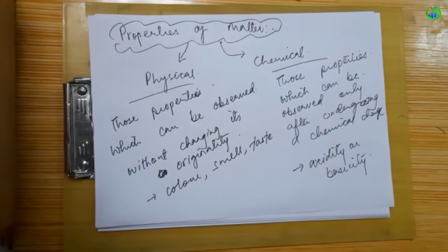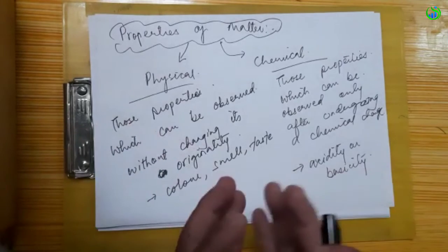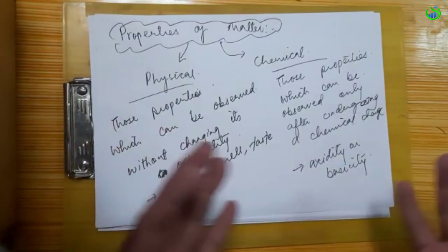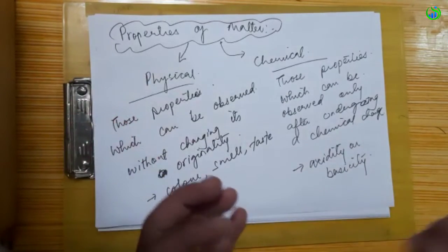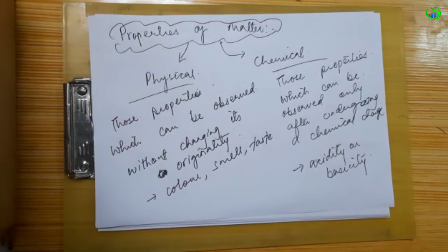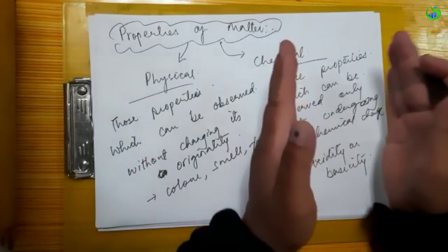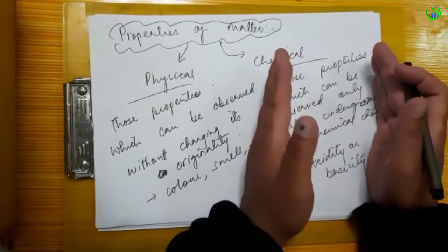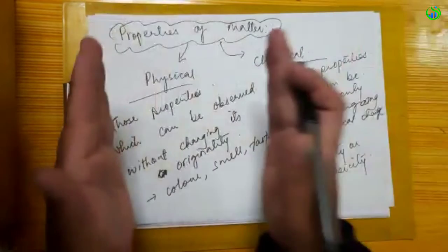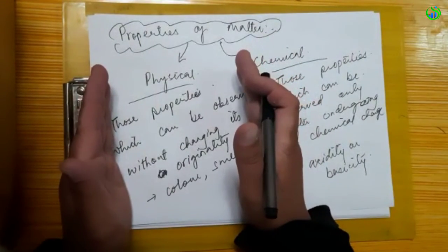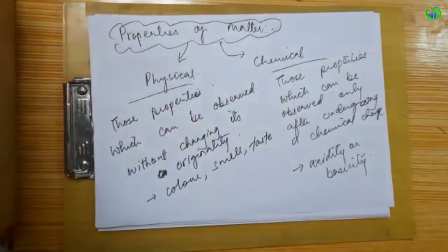A chemical reaction may produce bubbles and gas. If the observation is made after a chemical reaction, it is a chemical property. If the change or observation is made without a reaction, it is a physical property.